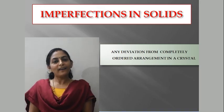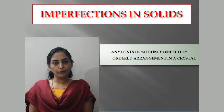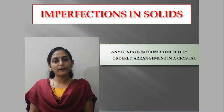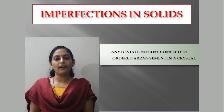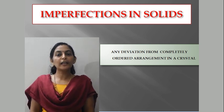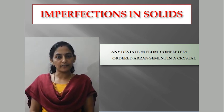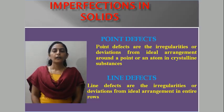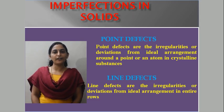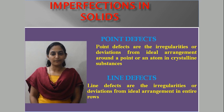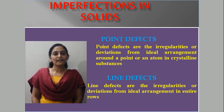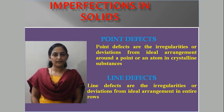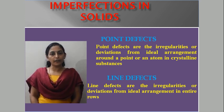Any deviation from a perfectly ordered arrangement in a crystal is known as imperfections or defects in crystals. Imperfections can be classified into two types: Point Defects and Line Defects.